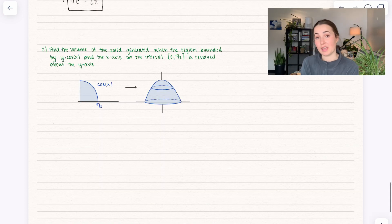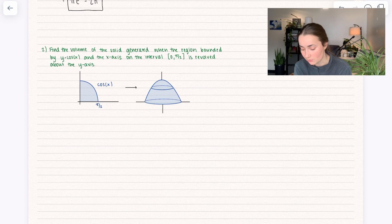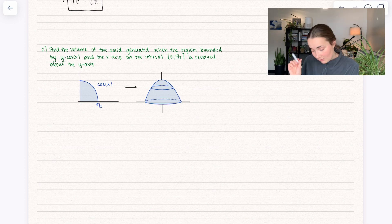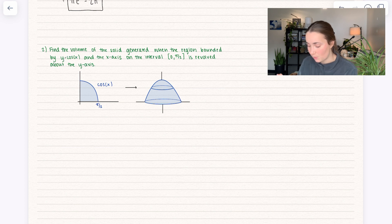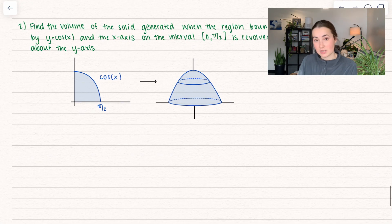We're going to do it again. Find the volume of the solid generated when the region bounded between cosine(x) and the x-axis on the interval 0 to π/2 is revolved about the y-axis. I drew it out — we have the 2D view of cos(x), and then we revolve that whole thing around the y-axis and get the little dome right here. It's not completely symmetrical, but just pretend it is.